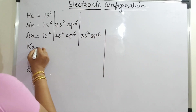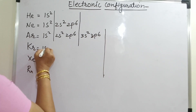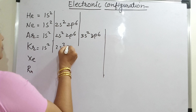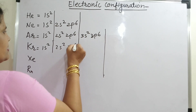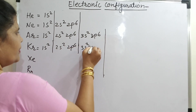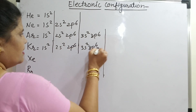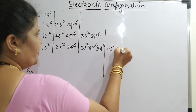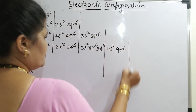For krypton: 1s2, 2s2, 2p6, 3s2, 3p6, 3d10, 4s2, 4p6.